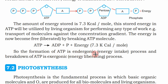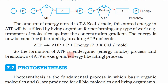The formation of ATP is an endergonic, or energy-intake, process, and the breakdown of ATP is an exergonic, or energy-liberating, process. In exergonic reactions, energy is released as a source of energy for the organism. In endergonic reactions, energy is taken in — that is what happens when ADP becomes ATP.